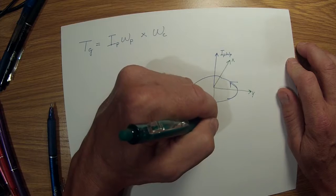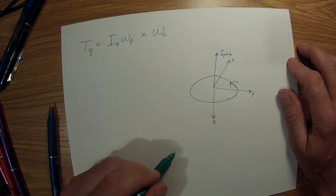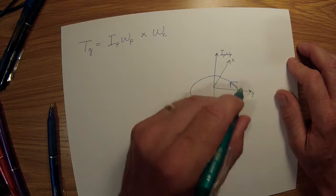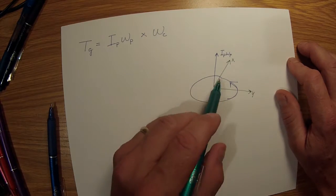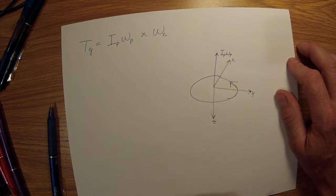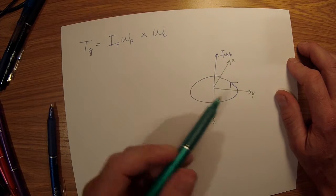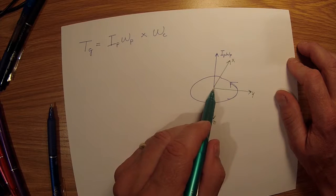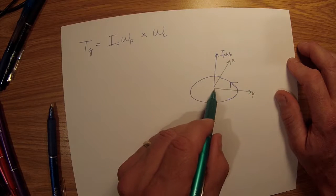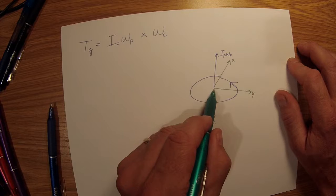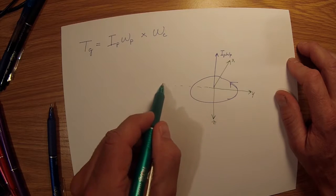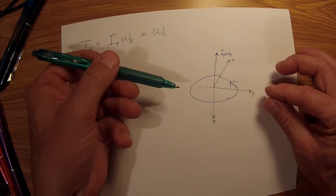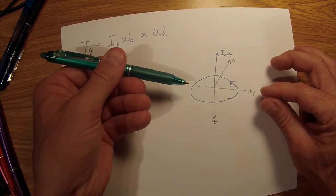We know by the right-hand rule, cross X to Y, thumbs point down, so we'd have a Z axis down. Now let's say as that propeller is spinning at a constant angular velocity Omega P—it could be changing, but it doesn't need to change for this torque to be generated.